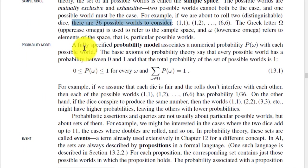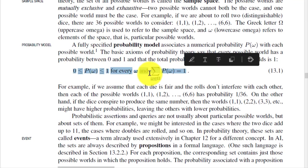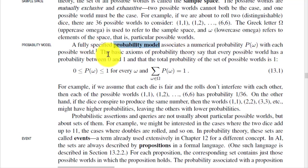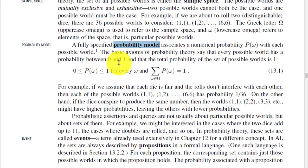A fully specified probability model associates a probability P(ω) with each possible world. The basic axioms of probability theory state that every possible world has a probability between zero and one, and we can define the probability model using this equation.